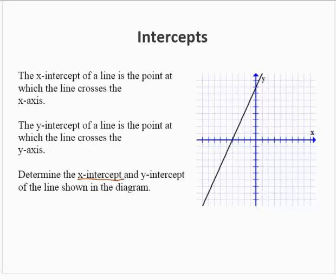The x-intercept is the point where it crosses the x-axis. There is the x-intercept, and so the x-intercept as an ordered pair appears to be negative 4, 0, assuming a scale of 1 on each axis. The y-intercept is the point at which the line crosses the y-axis, and that appears to be at 0, 8.